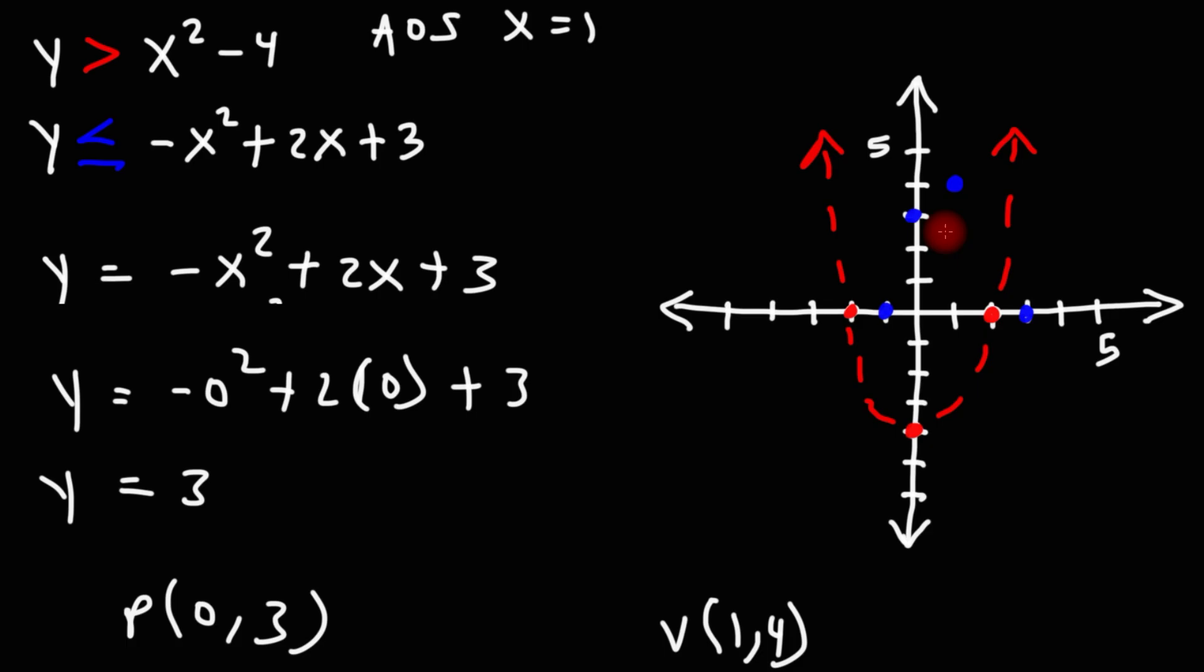Now, because these quadratic functions tend to be symmetrical, if we were to draw the axis of symmetry, because we have this point here, there's going to be another equal point here. It needs to be symmetrical along the line x equals 1.